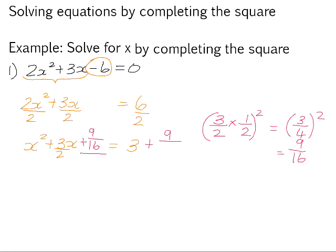We need to add 9 over 16 to both sides. This expression on the left hand side will now factorize because we have created a perfect square. So it will be x plus, because the middle term here is positive, the square root of 9 over 16 is 3 over 4. And on the right hand side, we can add 3 and 9 over 16, and that gives us 57 over 16.